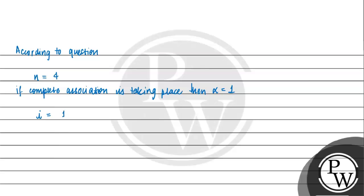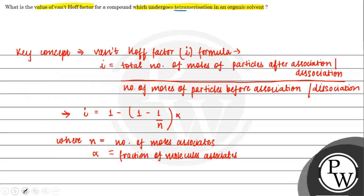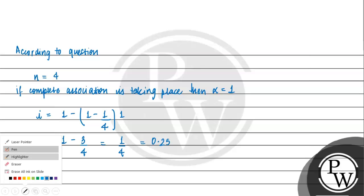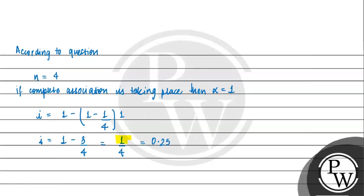So our i value is 1 minus (1 minus 1/4) into alpha which is 1. So i will be equal to 1 minus 3/4, which will be equal to 1/4, or we can say 0.25. This is the final answer to the question: 1/4 or 0.25.